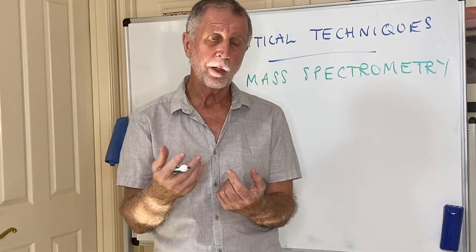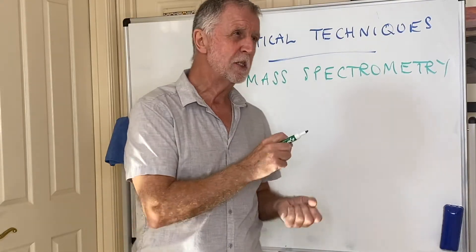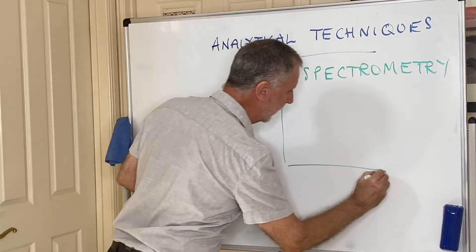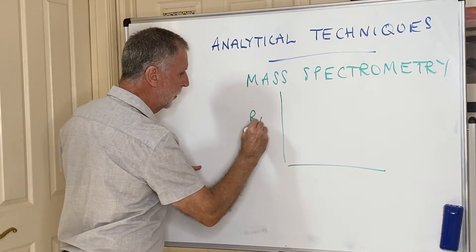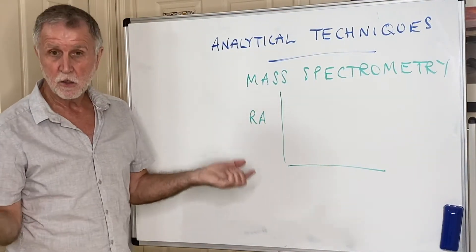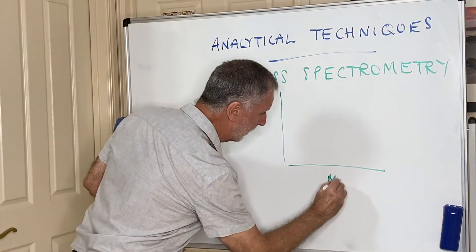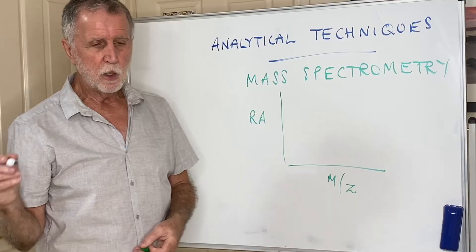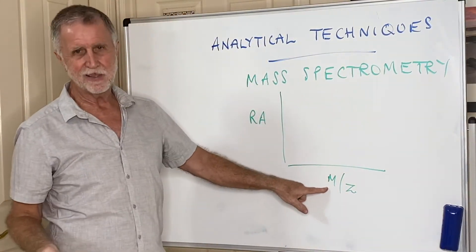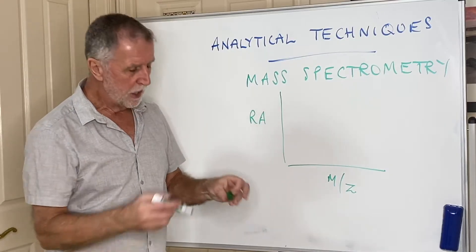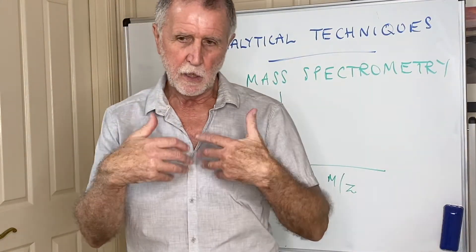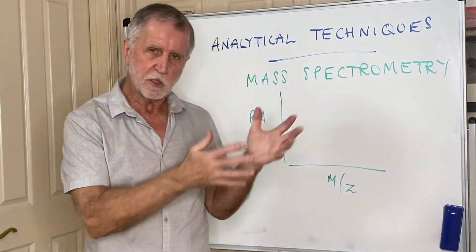Instead, they're going to ask you to use mass spectrometry as an analytical tool — using a mass spectrum. A mass spectrum has relative abundance on the y-axis, which tells you how much of a particular substance is present, and the mass-to-charge ratio along the x-axis. Since the charge is almost always +1, that is essentially the same as the mass of the ion.